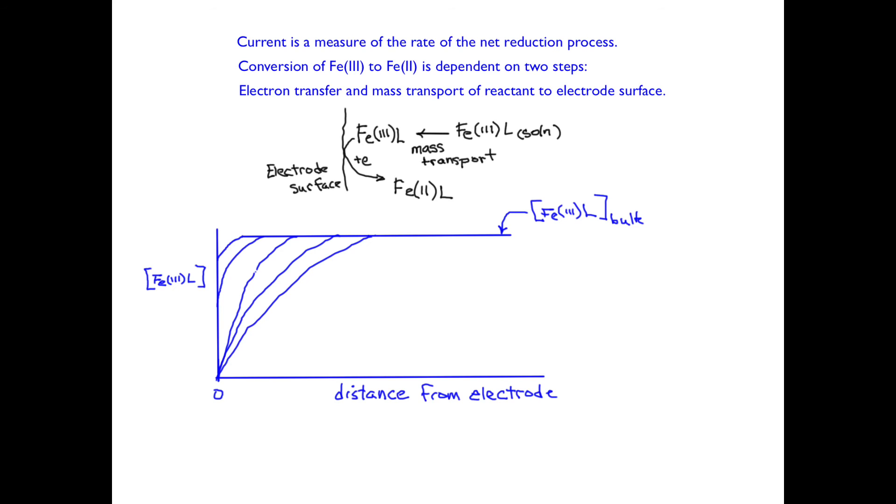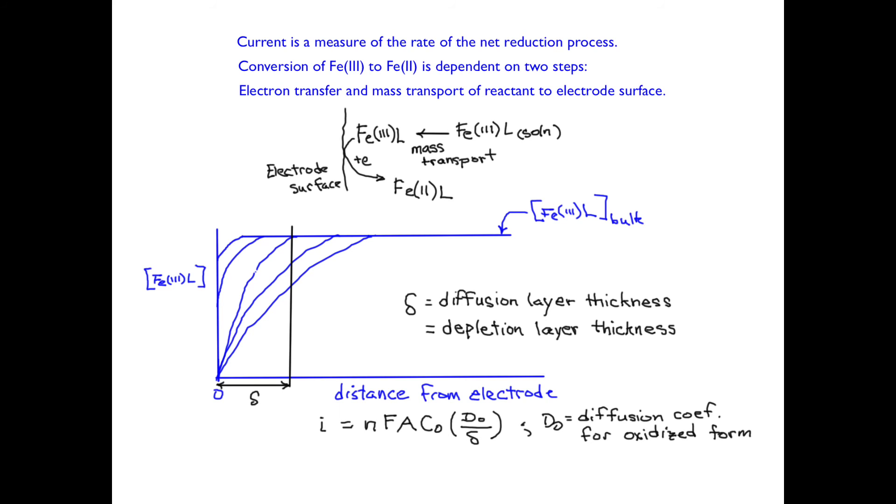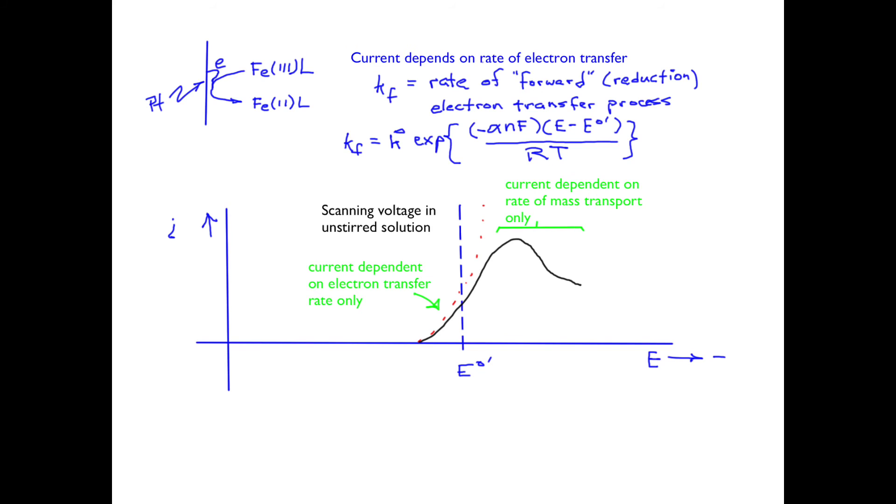With time, this depletion zone grows even further into the solution. The mass transport process can't keep up, and so the current begins to drop. At any point in time, we might characterize the depletion zone as the distance from the surface to the roll-off in the concentration versus distance curve. This is known as the diffusion layer thickness, and also called the depletion zone thickness. The current is inversely proportional to the diffusion layer thickness. Diffusion layer thickness changes with time. The current drops with time.